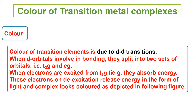The color of transition elements is due to d-d transitions. When d-orbitals are involved in bonding, they split into two sets of orbitals — there are 5 d-orbitals in total. One set is high energy (EG) and the other is low energy (T2G). Electrons are transferred from T2G to EG, and the color emitted corresponds to the energy difference.